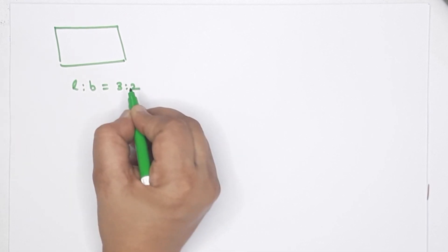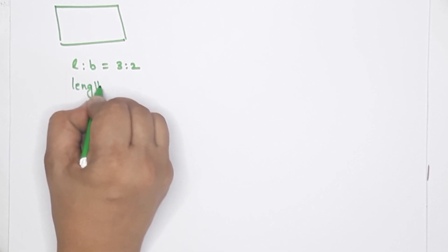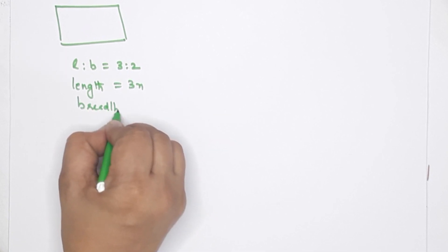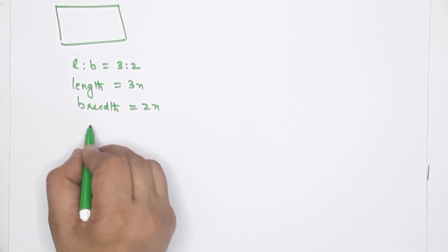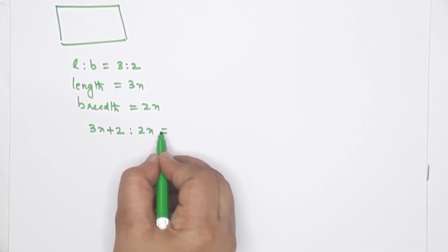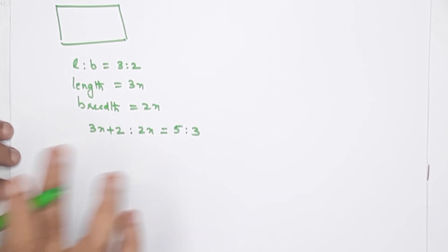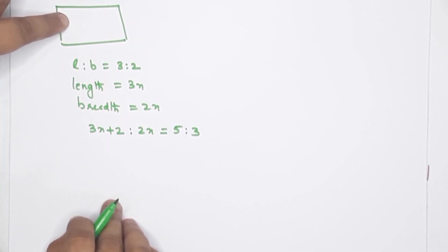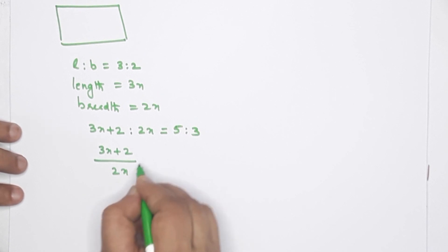Length is 3x, breadth is 2x. Length is increased by 2, so the new length is 3x plus 2. The new ratio of length to breadth is 5 is to 3. So we set up: (3x plus 2) by 2x equals 5 by 3, then cross-multiply: 3 into (3x plus 2) equals 5 into 2x.